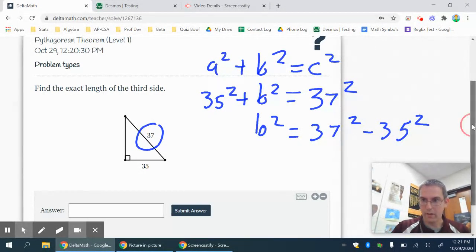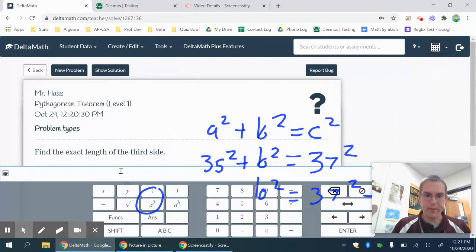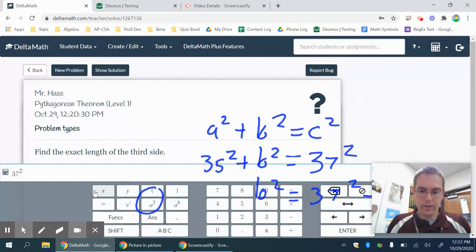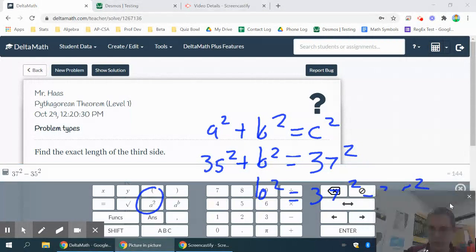but I also have access to a built-in calculator within Delta Math. So my Delta Math calculator is up here in the corner. I'm going to have to drag to get it to show up. So I have 37 squared minus 35 squared.